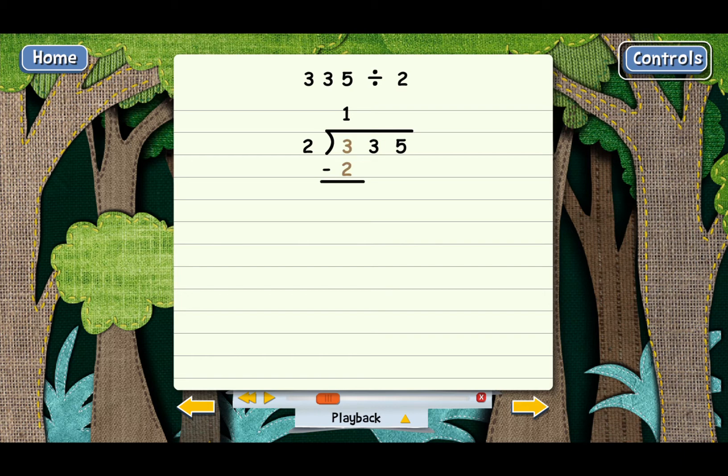Next, we subtract. Go ahead and subtract 3 minus 2. You got it. From here, we bring down the next digit, which is the 3. That turns the 1 into 13.